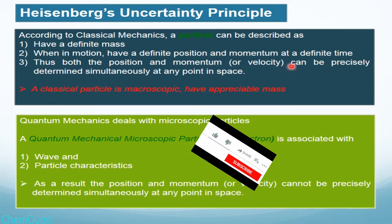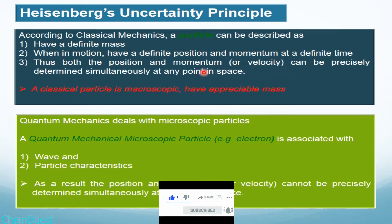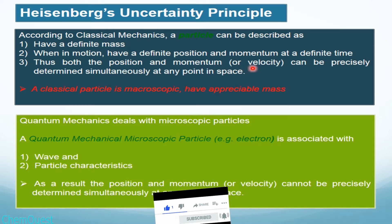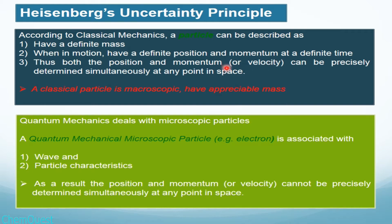When we talk about measurement of momentum, momentum is mass times change in velocity. Mass is fixed; change in velocity gives change in momentum. A classical mechanical particle is macroscopic and has an appreciable, definite mass which can be measured easily.